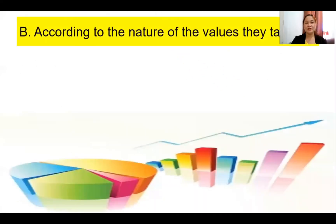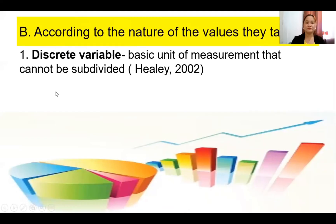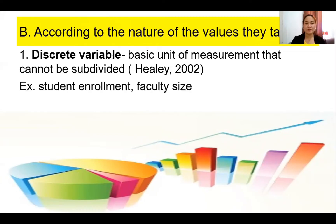Another classification of variables is according to the nature of the values they take on. We have discrete and continuous. A discrete variable is the basic unit of measurement that cannot be subdivided — whole numbers. For example, student enrollment: you cannot subdivide a person. Faculty size is also a discrete variable — whole numbers.